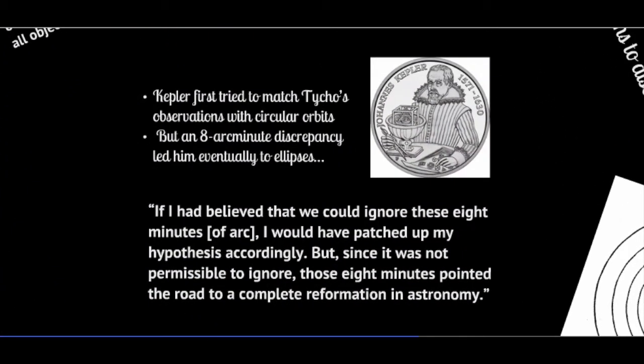Kepler was the first one to try to match Tycho's observations with circular orbits, and he came very close, but he found an eight arc minute discrepancy in his calculations. Eight arc minutes is about one-fourth the size of the full moon. A lot of people at that time would have just set it aside to observational error, but Kepler really believed in Tycho Brahe's observations, so he didn't believe he could ignore those eight arc minutes. When he tried to fix the problem, it gave him new ideas and totally reformed our ideas in astronomy.